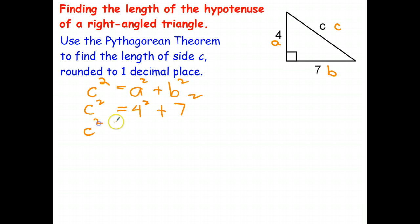The next step is to just simplify the right-hand side. So four squared is 16, seven squared is 49, and add those two together. Well, 49 plus 10 is 59, 59 plus 6 is 65. So now we've worked out that c squared equals 65.